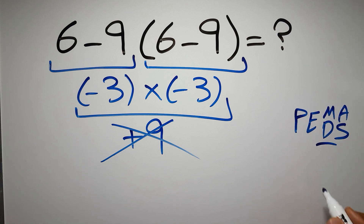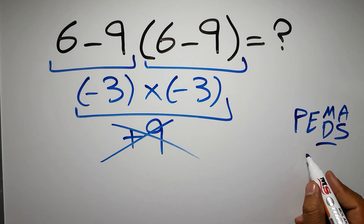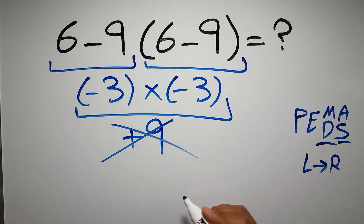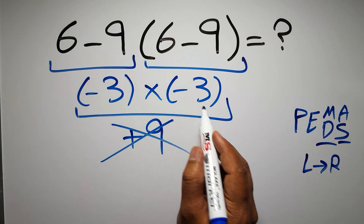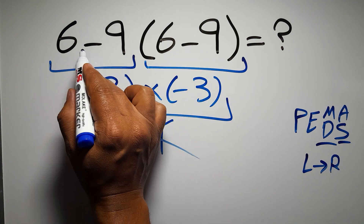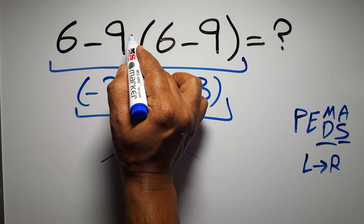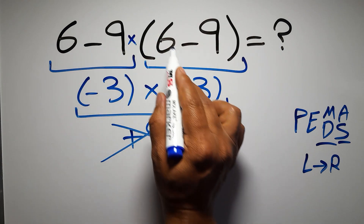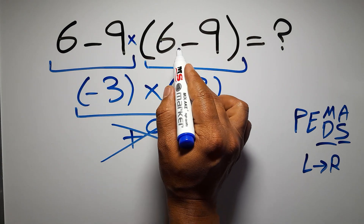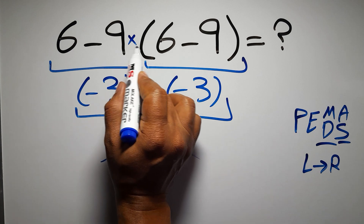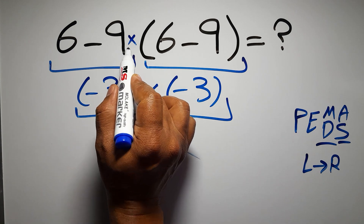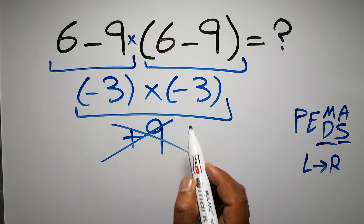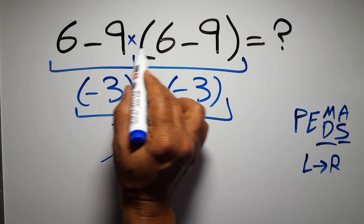Remember that multiplication and division have equal priority and we have to work from left to right, and the same applies to addition and subtraction. Here in this expression we have one subtraction, one multiplication, and one parentheses. Inside these parentheses we have one subtraction. Here we have a multiplication because in mathematics when a number is placed next to parentheses it means multiplication.